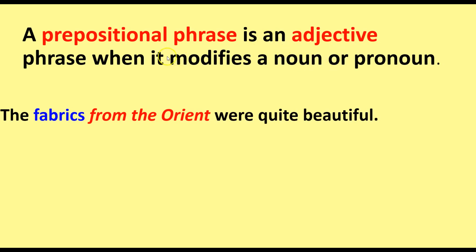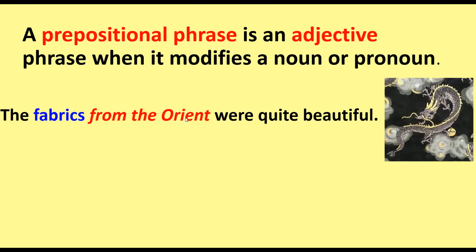An example of this would be: 'The fabrics from the Orient were quite beautiful.' From the Orient is the prepositional phrase in the sentence. It's modifying the noun 'fabrics' — our subject — telling us which fabrics: the ones from the Orient. So it is considered an adjective prepositional phrase, acting as an adjective.